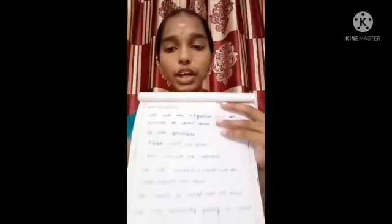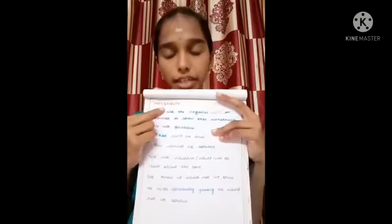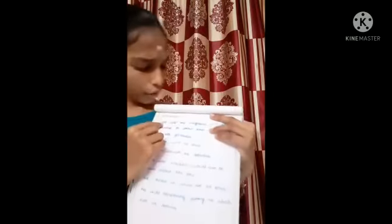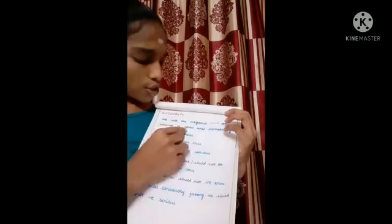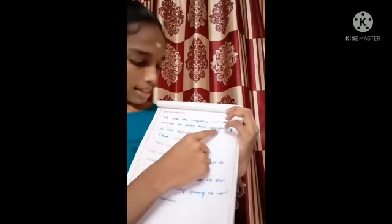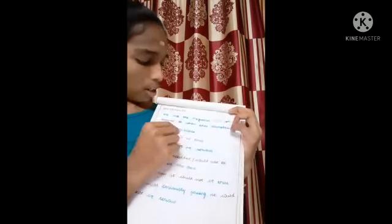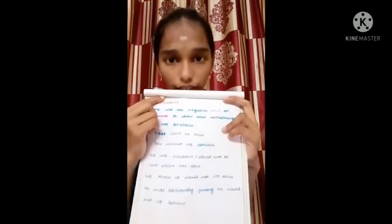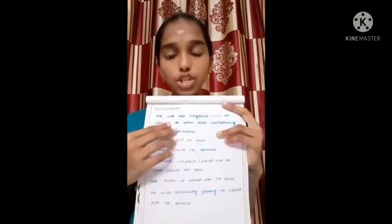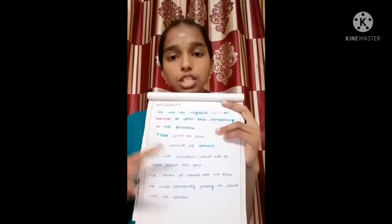So, now we saw about the modal verbs. Next, we are going to see about the impossibility. We use the negative 'can't' or 'cannot' to show that something is not possible. As we know, we use 'can't' or 'cannot' — negative words — to show that something is not possible.